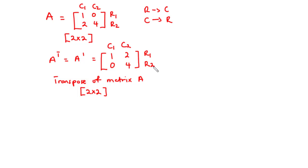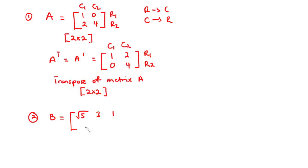Now let's consider a situation where the number of rows and columns of the given matrix is not the same. Let's assume we have matrix B with elements: square root of 5, 3, 1, 2, 4, 8. This is a 2x3 matrix because it has 2 rows and 3 columns.